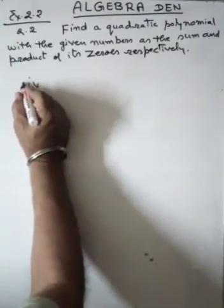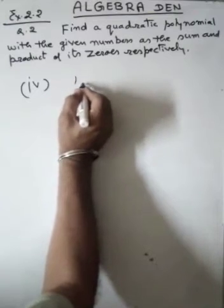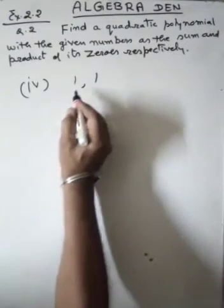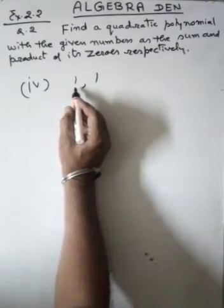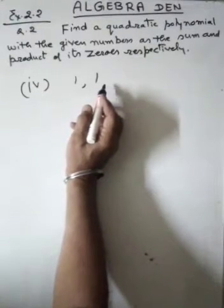In fourth part, the given zeros are 1 and 1, that means the sum of zeros is also 1 and the product of zeros is also 1.